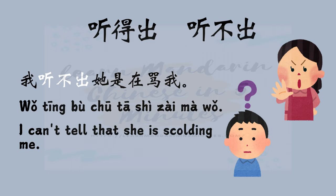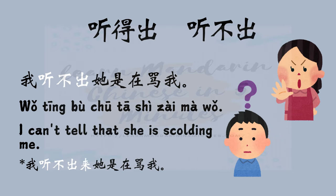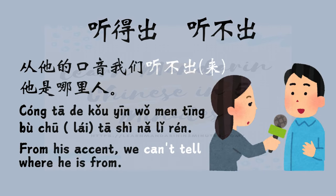我听不出她是在骂我 — I can't tell that she is scolding me. You can also add 来 after 听不出, so the sentence becomes 我听不出来她是在骂我. Another example: 从她的口音我们听不出她是哪里人 — From her accent, we cannot tell where she is from.